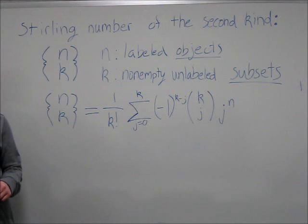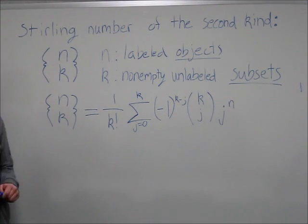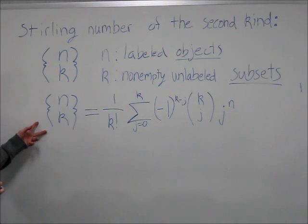Stirling Number of the Second Kind is the number of ways unlabeled objects can be placed into k non-empty, unlabeled subsets, as represented by this equation.